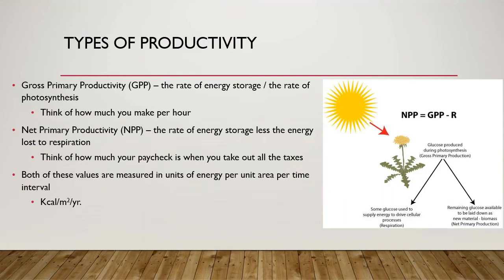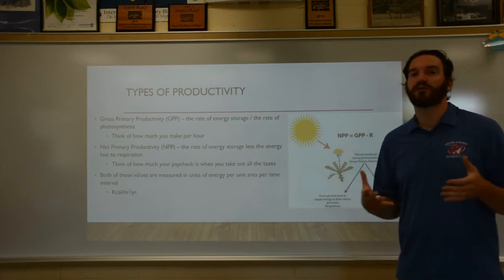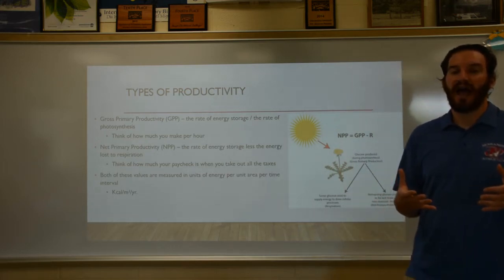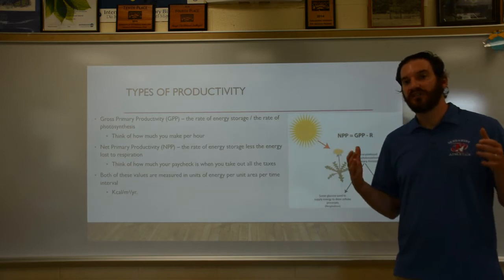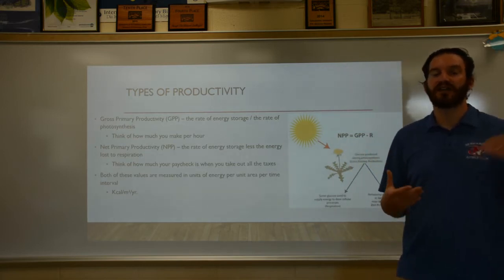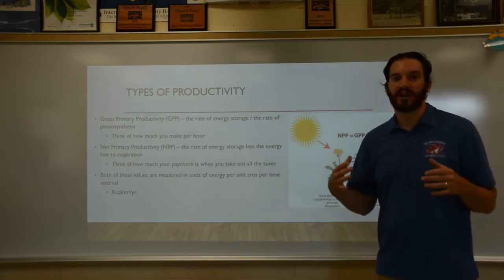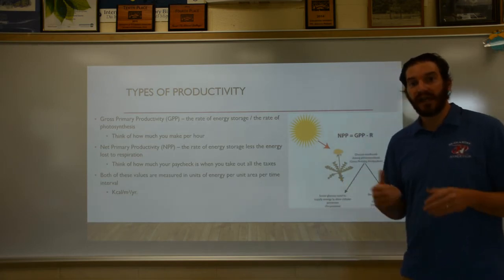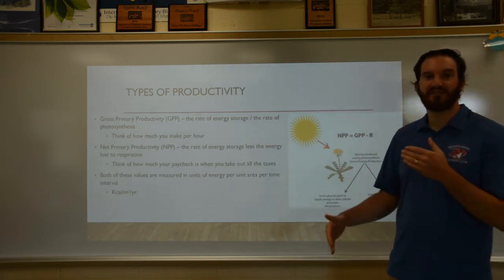When we talk about primary productivity, there are actually two different measures: GPP and NPP. GPP stands for Gross Primary Productivity, which is the pure rate of biomass generation — essentially the rate of photosynthesis. It measures how efficiently and how fast an ecosystem takes solar energy and converts it into organic matter.